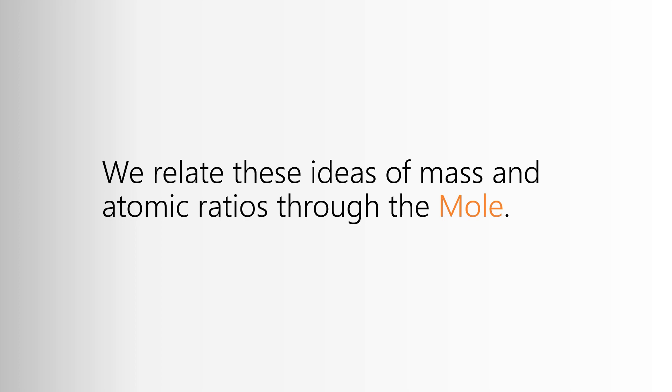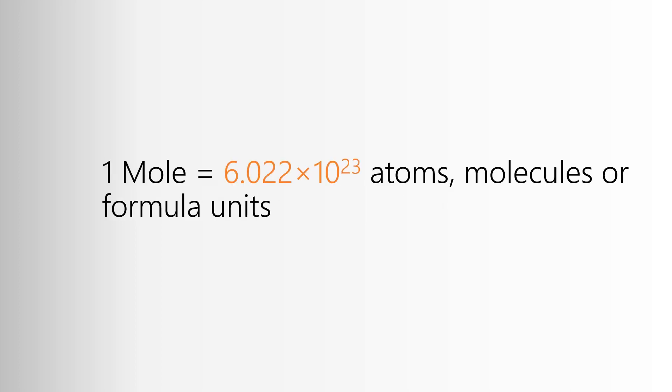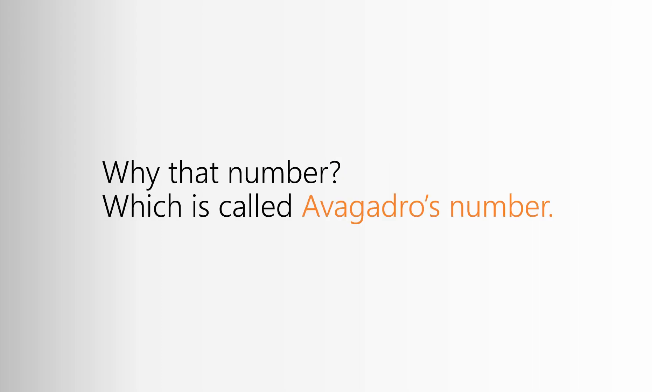The way we do that is a concept called the mole. This mole is a unit of quantity that's normalized so that all atoms are equal to each other. A mole is defined as 6.022 times 10 to the 23rd atoms, molecules, or formula units. That 6.022 times 10 to the 23rd is a famous number in chemistry. It's referred to as Avogadro's number.